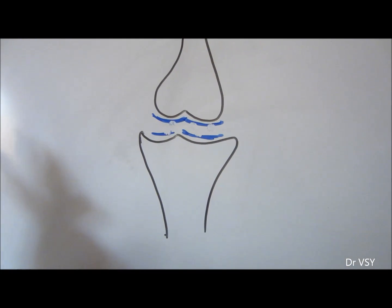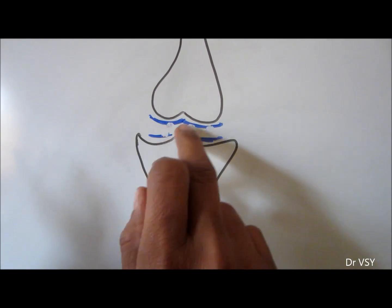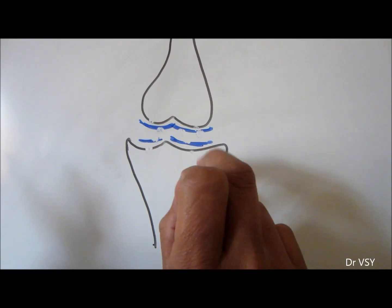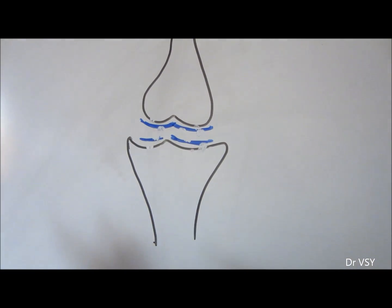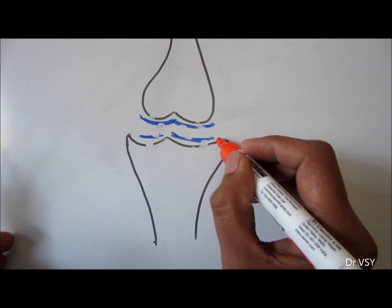They show the wear and tear later in life, so what happens is along with this the bone also undergoes wear and tear. So the body's mechanism later on leads to the formation of new bones.